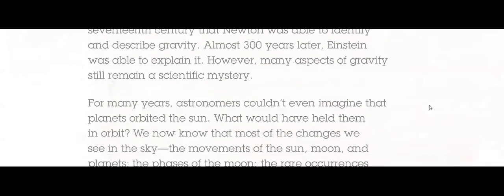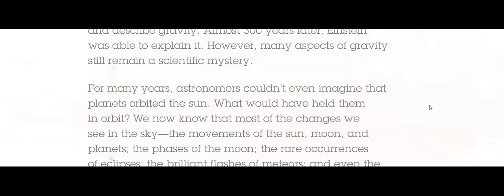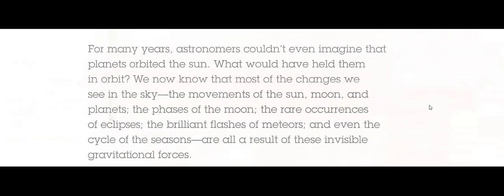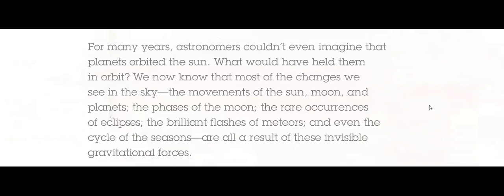For many years, astronomers couldn't even imagine that planets orbit the sun. What would have held them in orbit? We know now that most of the changes we see in the sky—the movement of the sun, moon, and planets, the phases of the moon, the rare occurrence of eclipses, the brilliant flashes of meteors, and even the cycle of the seasons—are all a result of the invisible gravitational force.